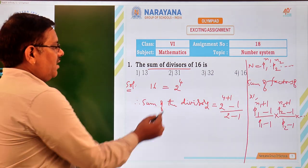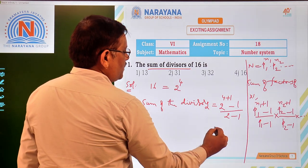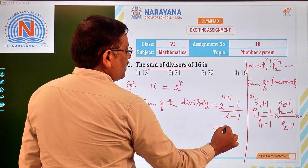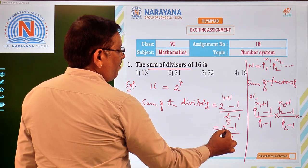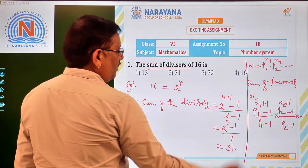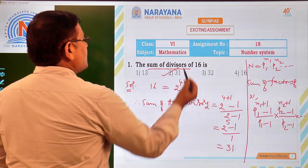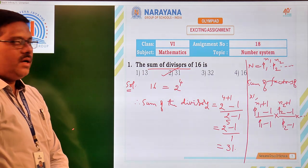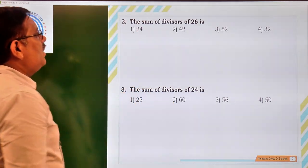So, that is 2 to the power of 4 plus 1 minus 1 by 2 minus 1. That is 2 power 5 minus 1 by 2 minus 1 is 1. 2 power 5 is 32, 32 minus 1 is 31 by 1 means you can neglect it, so the answer for this question is 31, that is second option. Now let us move to the next question.